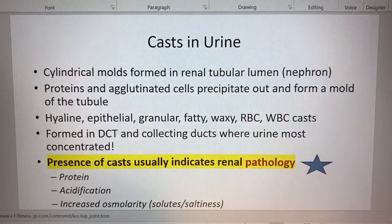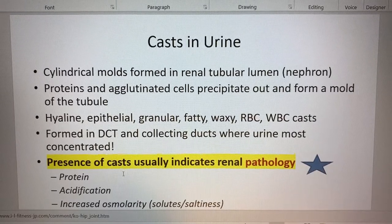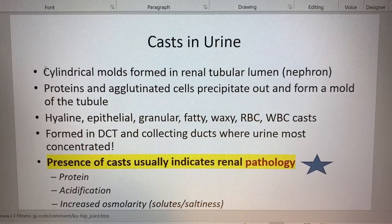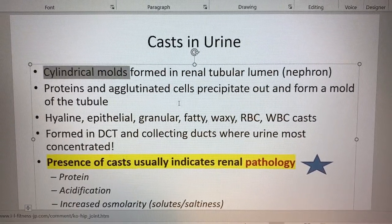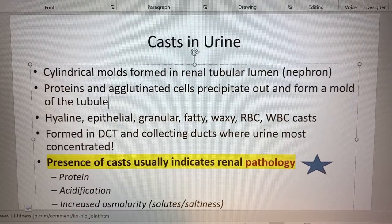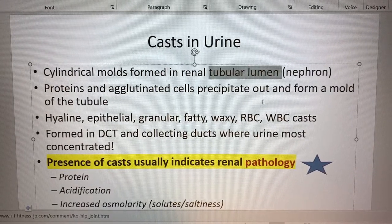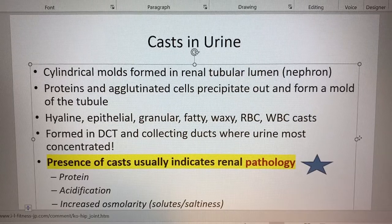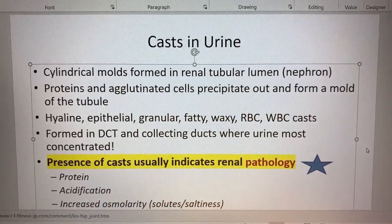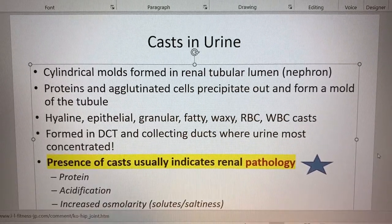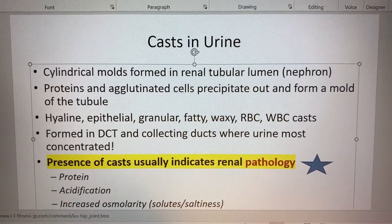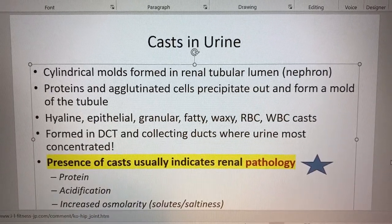Let's go back to the cast slide. Note that they are often cylindrical in shape, formed in the tubular lumen of the nephron. The things that form the cast, like proteins or anything that precipitates out, can form a cast inside the tubule.